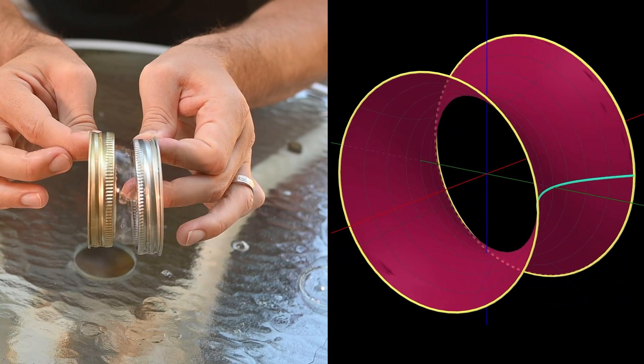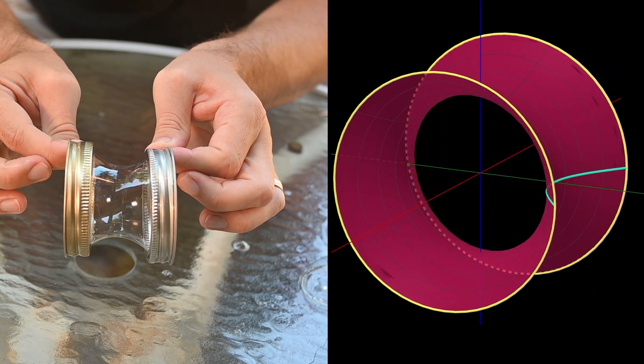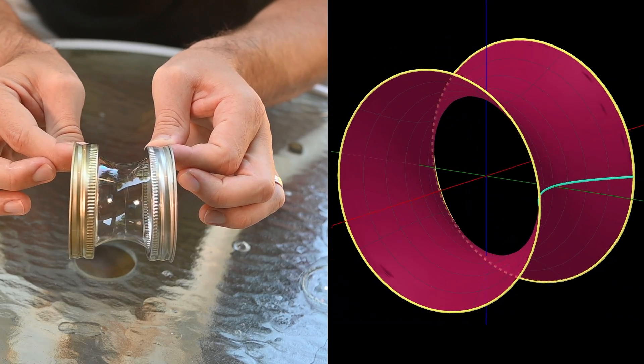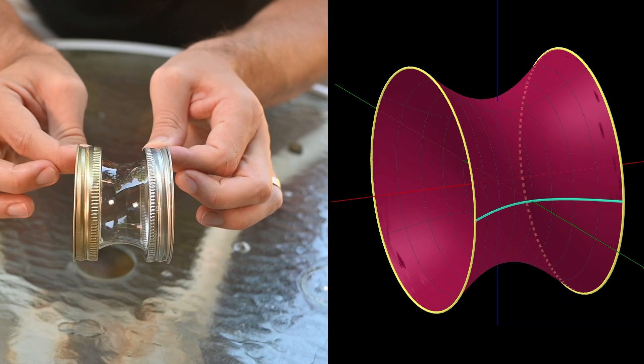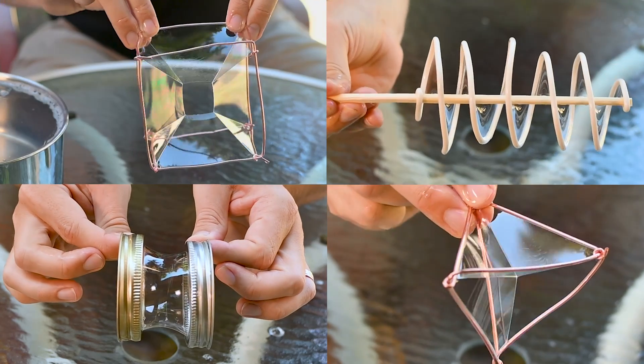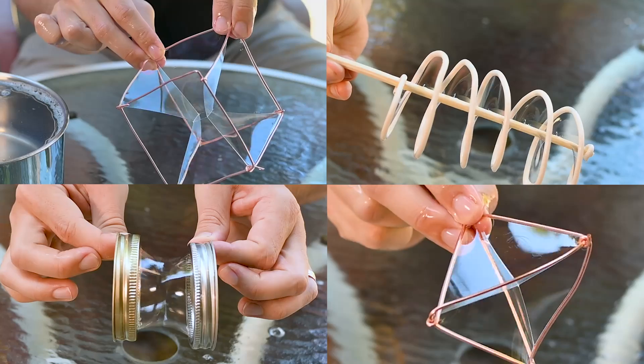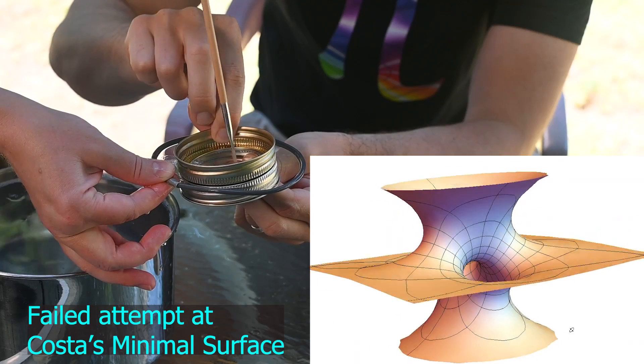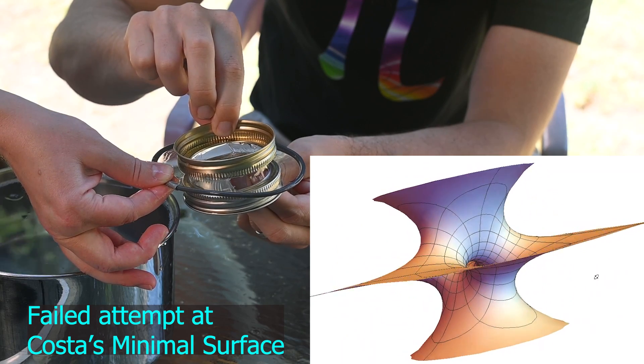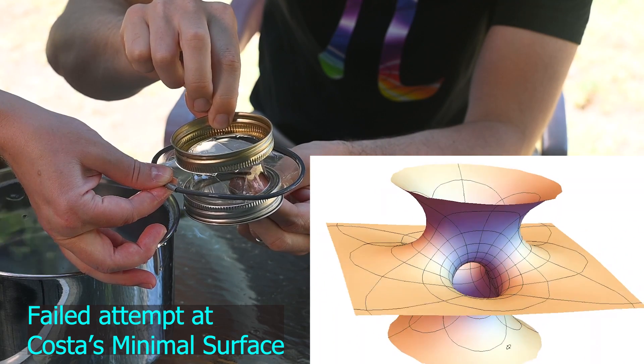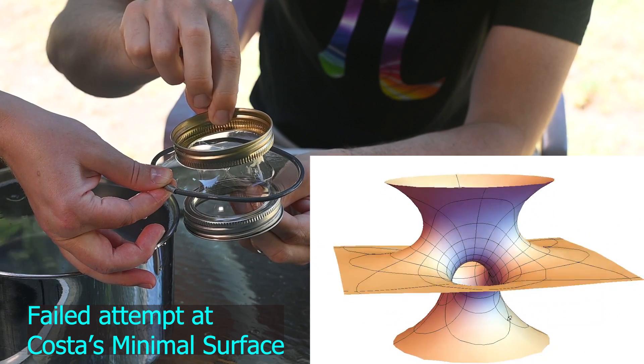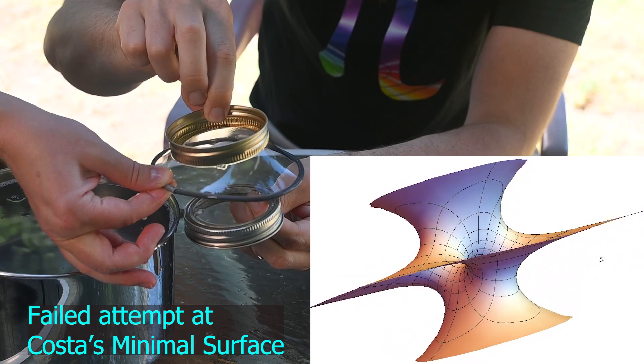And so there we have it. This catenoid, which is just a hyperbolic cosine that has been revolved around the x-axis, forms the minimal possible surface area going to be able to connect these two particular circles. We saw at the beginning of the video that different boundaries create all sorts of different minimal surfaces, and in fact there are many cool surfaces that extend beyond at least my bubble making capabilities. So truly we've only minimally scraped the surface of the topic of minimal surfaces.